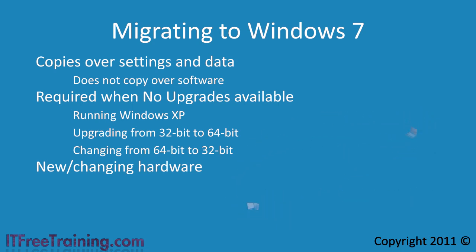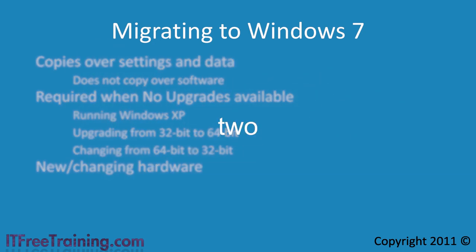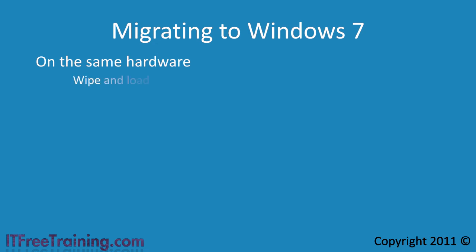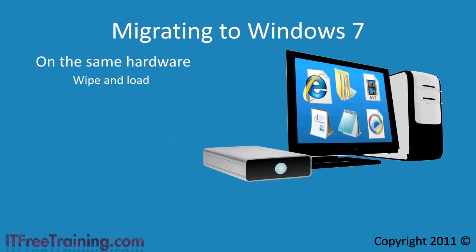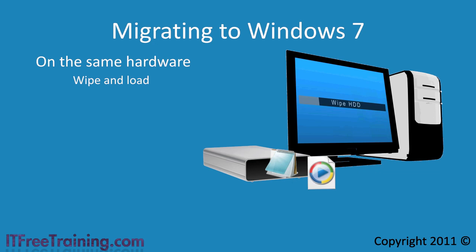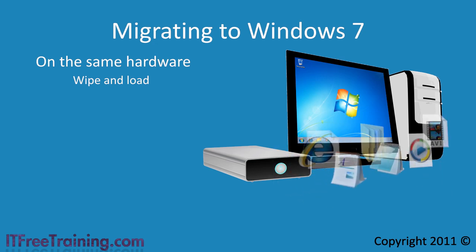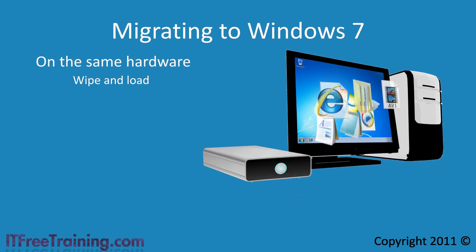When migrating to Windows 7 there are two different ways to perform the migration. First, if you install Windows 7 on the same hardware that contains an existing operating system, this is called wipe and load. You literally backup everything you need, wipe the hard disk, and then install the new operating system. Once complete you copy over your settings, data, and reinstall your applications.